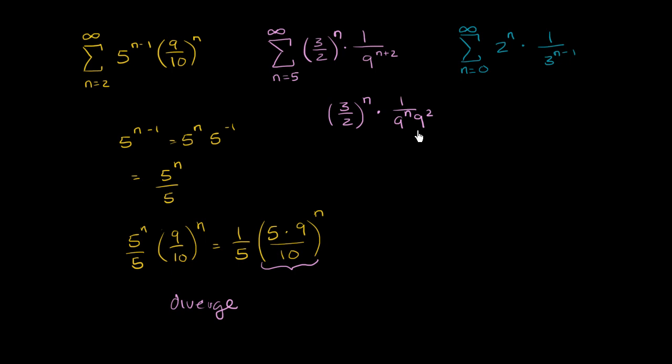If we write it that way, then this is going to be 1 over 9 squared, which is 81, times 3 halves to the n times 1 over 9 to the n is the same thing as 1 over 9 to the n. Notice, 1 over 9 to the n, if I raise 1 to the n power, it's not going to change the value of that 1. And so that's going to be the same thing as 1 over 81 times, let's see, 3 divided by 9, we're going to get 1 over 6, 1 over 6 to the n.